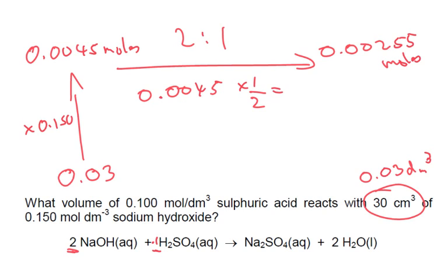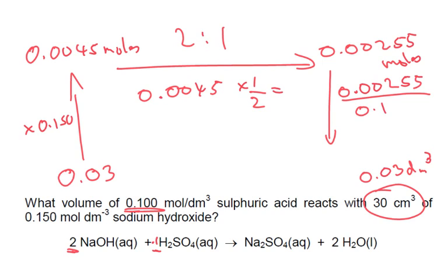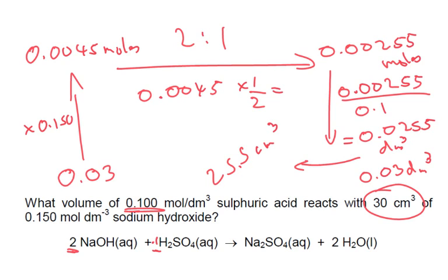Then we want to work out the volume, so we divide 0.00225 by the concentration 0.1, giving 0.0225 decimetres cubed. Converting to centimetres cubed by multiplying by 1000, we get 22.5 centimetres cubed. That's our final answer.